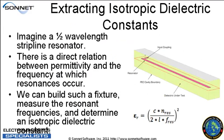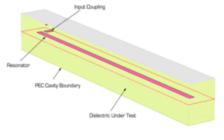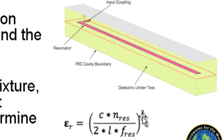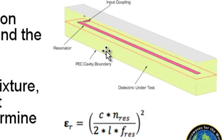At Sonnet we have a way to extract anisotropic dielectric constants. But first, let me explain how you can extract isotropic dielectric constants. If we imagine a strip line resonator, there's going to be a relation between the frequencies it resonates at and the permittivity of the material. There's a direct relation between permittivity and resonant frequencies, so we could build this, measure the resonances, and determine the permittivity of the material.